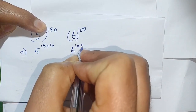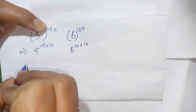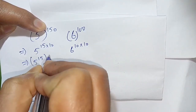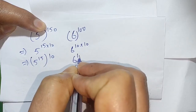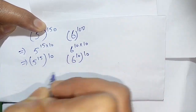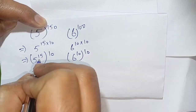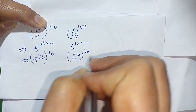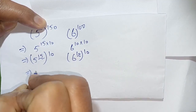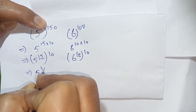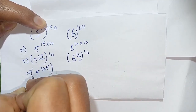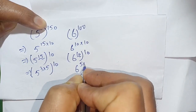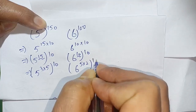We can write this as (5 raised to power 15) bracket power 10 and (6 raised to power 10) bracket power 10. Now, since 15 as well as 10 are multiples of 5, we can write this as (5 raised to power 3, times 5) bracket power 10 and (6 raised to power 5, times 2) bracket power 10.